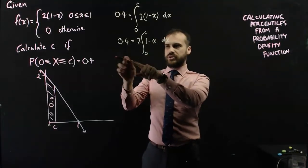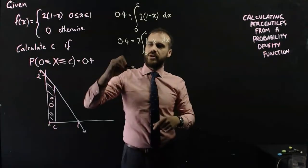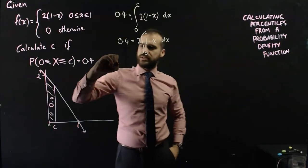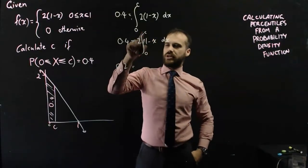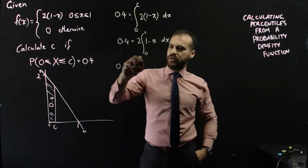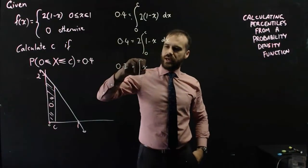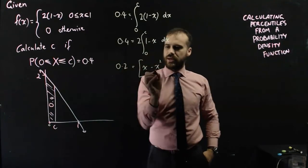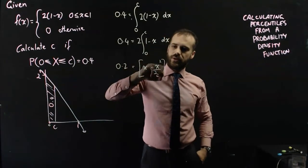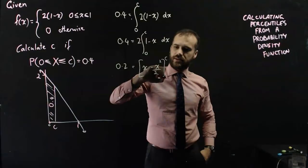And then I'm going to divide by 2. I'm going to put it here with the 0.4. And 0.4 divided by 2 is 0.2. So now I have a nice little integration. I'm going to integrate 1 minus X, which will be X minus X squared on 2. And that is between C and 0.